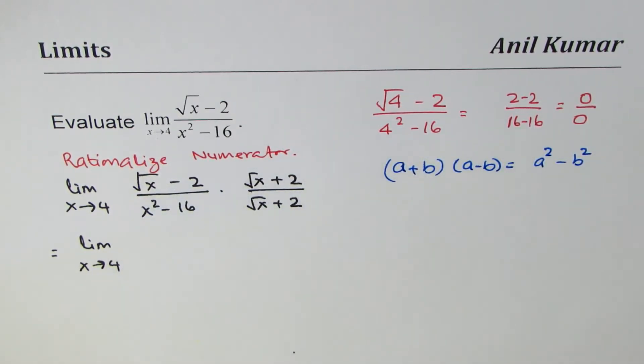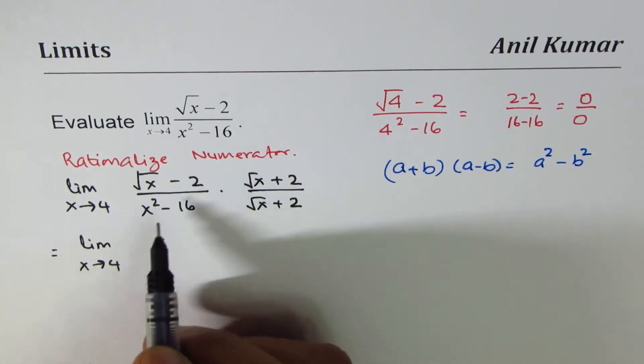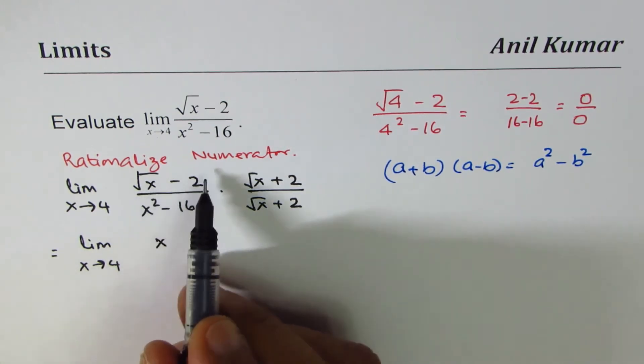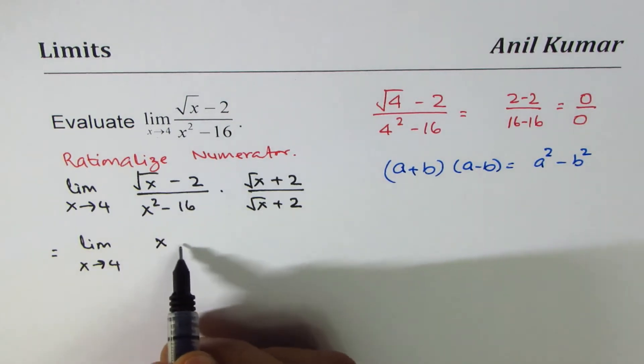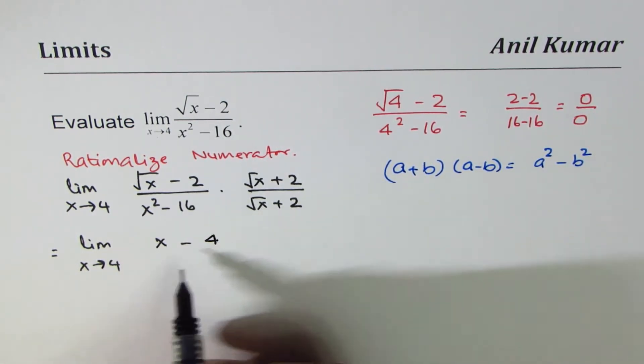Since x is greater than or equal to 0, it is positive x. A squared minus b squared, which is 4. So that is the numerator.